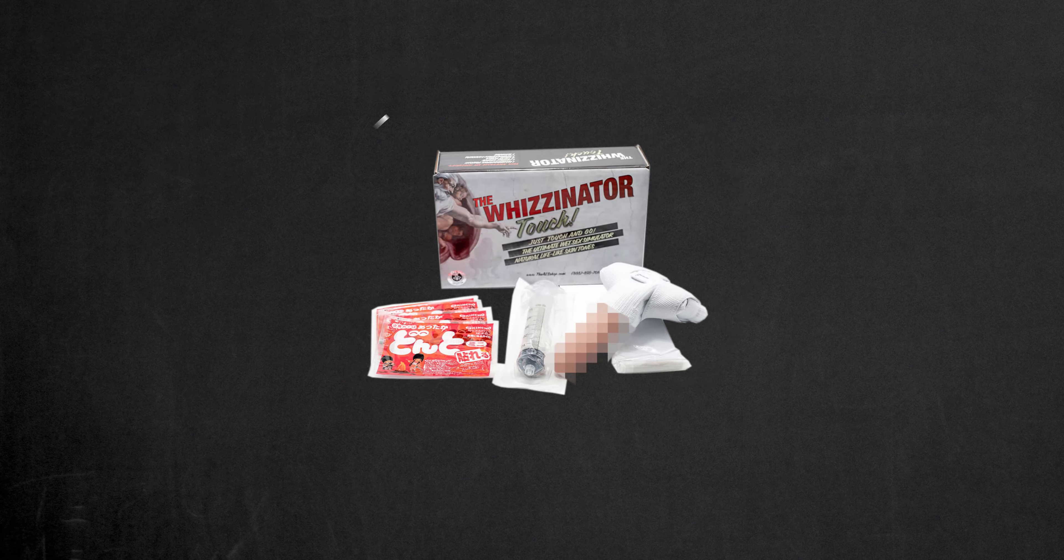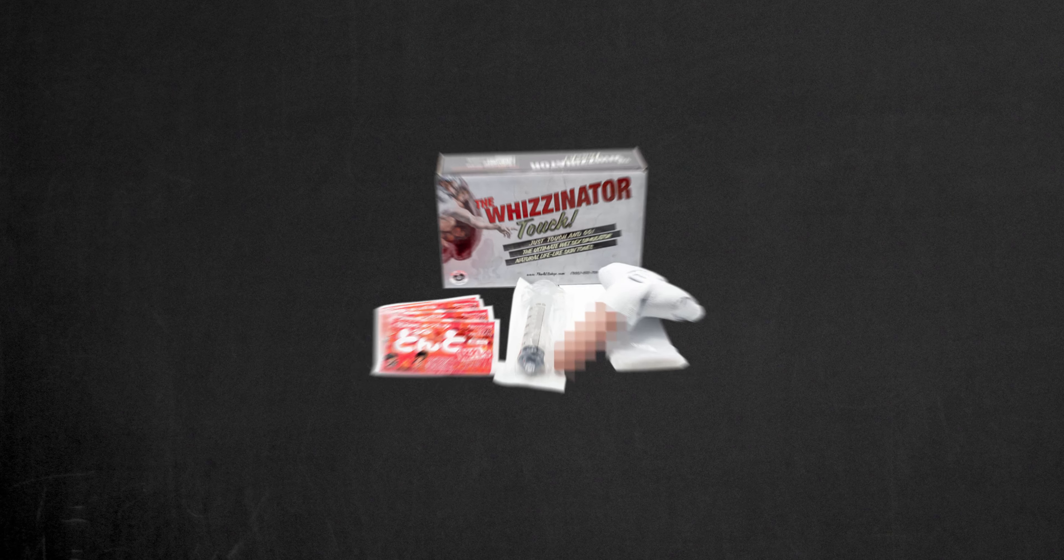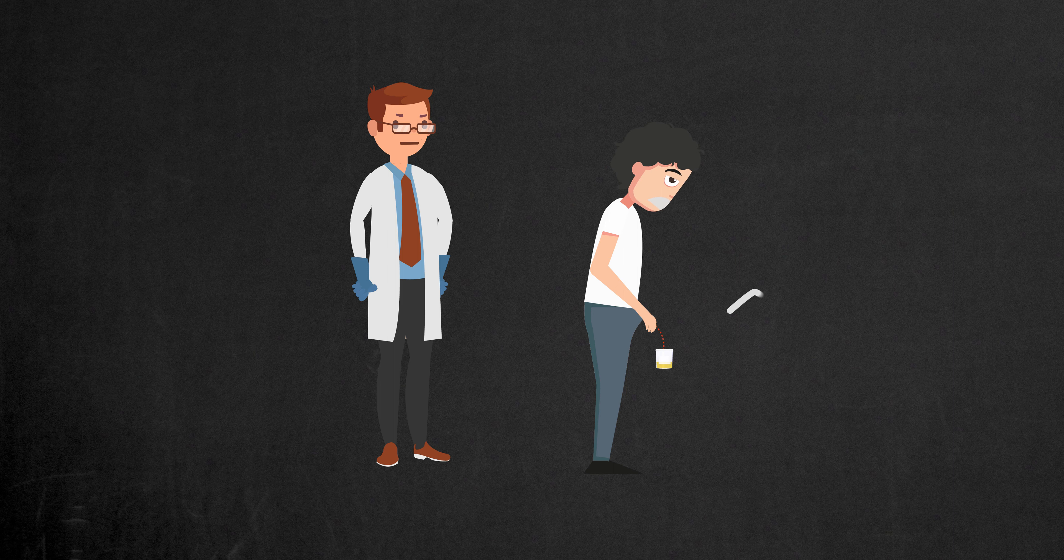Wizenator is a prosthetic device for using synthetic urine, essentially a fake penis. It's intended for passing drug tests under direct observation. It means someone is watching you pee into a cup. Sounds uncomfortable, right?